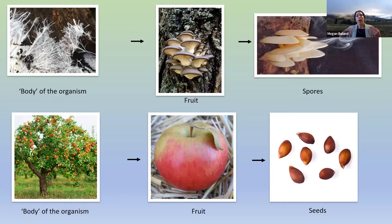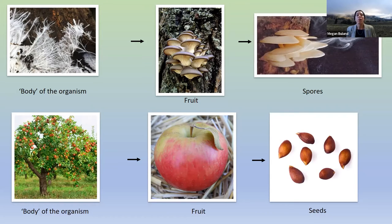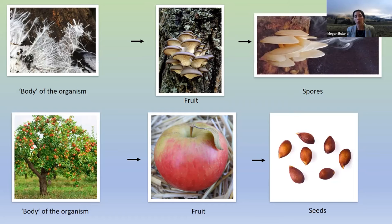Mushrooms are decomposers — they feed on material and don't make their own food like plants do; they require a food source. One of the easiest ways to think about a fungus is like an apple tree. When we say fungus, we mean the body of the organism — the true organism itself — which for fungi exists as this white filamentous stuff called hyphae. Hyphae is the actual body of the fungal organism: the living, thriving part that feeds, takes up nutrients, and helps the organism grow.